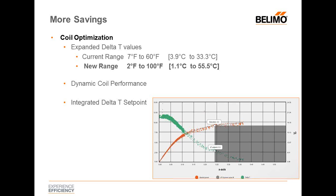This also positions us for future and current energy standards being implemented, as having this expanded delta T range puts us in a good place to be compliant with those. One of the things we've also integrated now is dynamic coil performance, so you can see changes in usage or operational characteristics within the coil. You can see when the power starts to degrade in the coil dynamically — all integrated right within the actuator and the integrated web server.